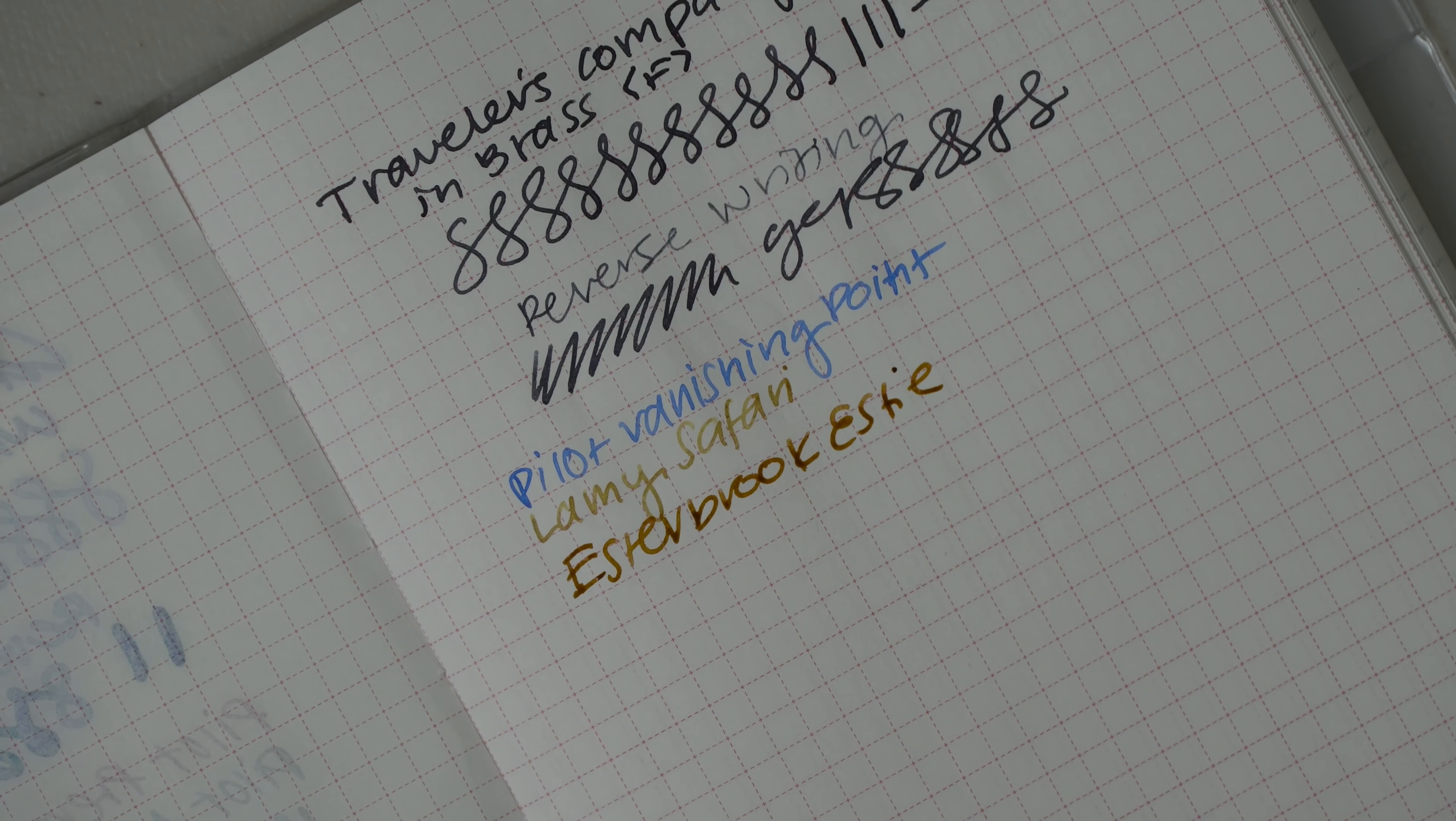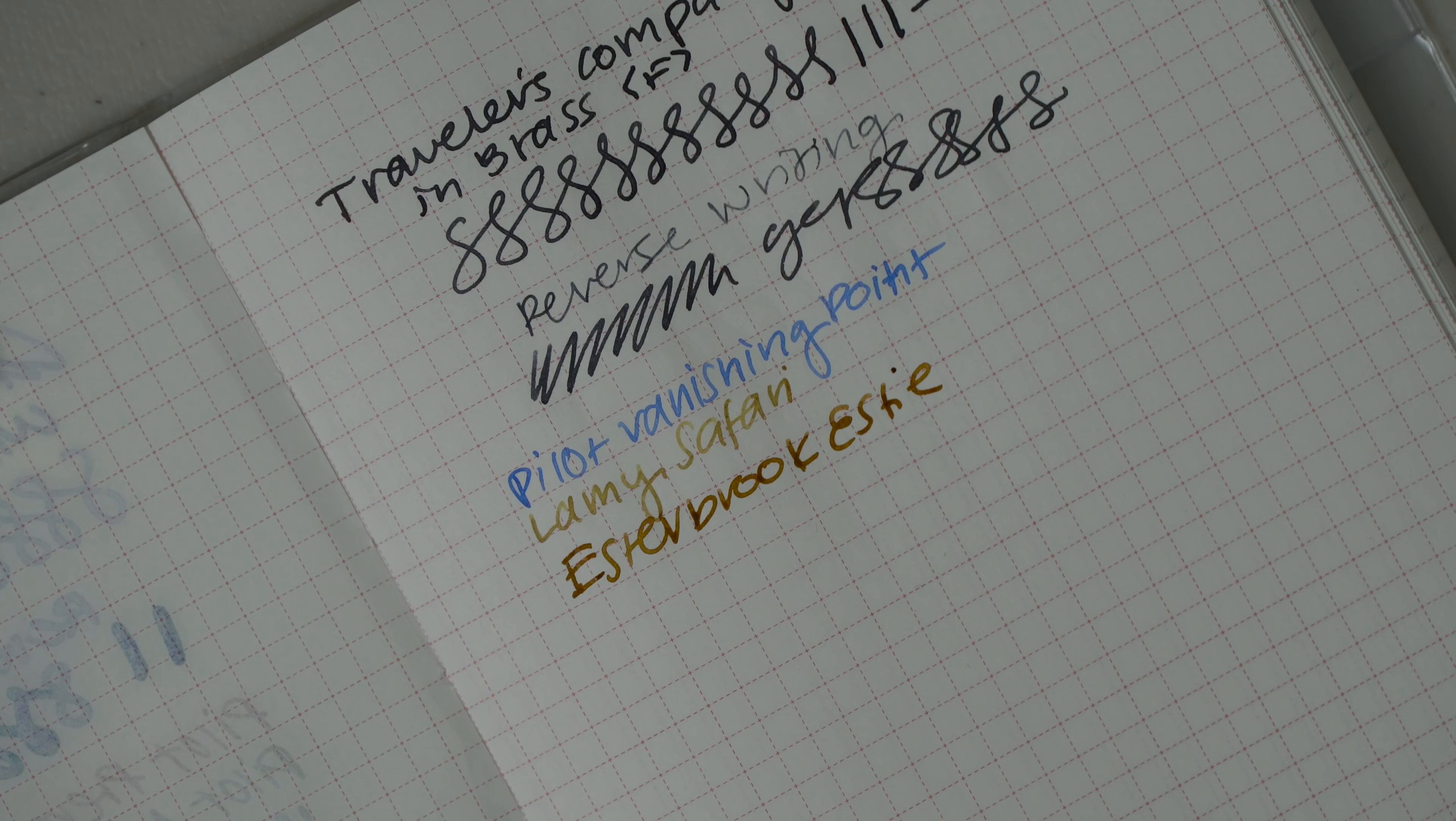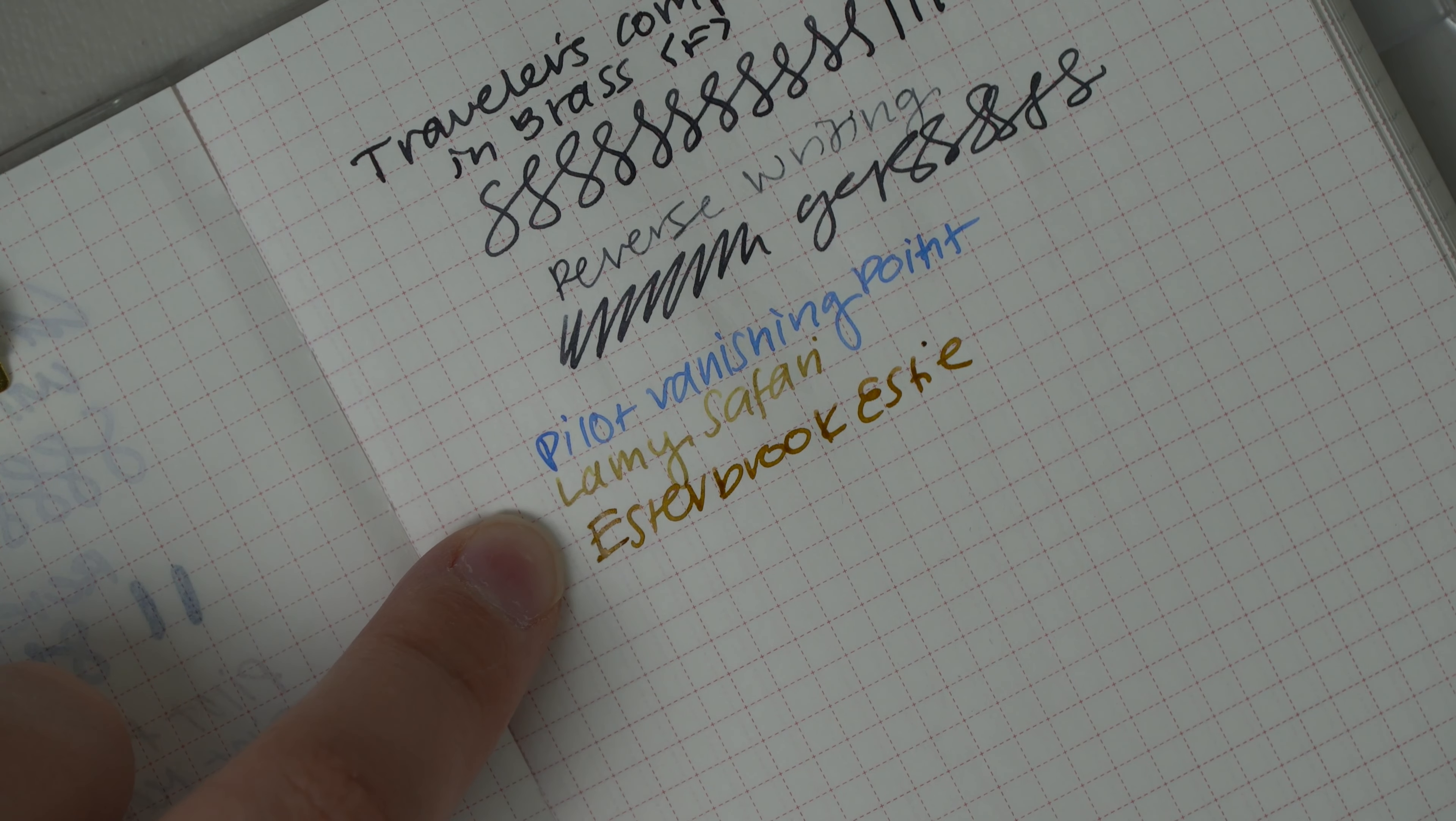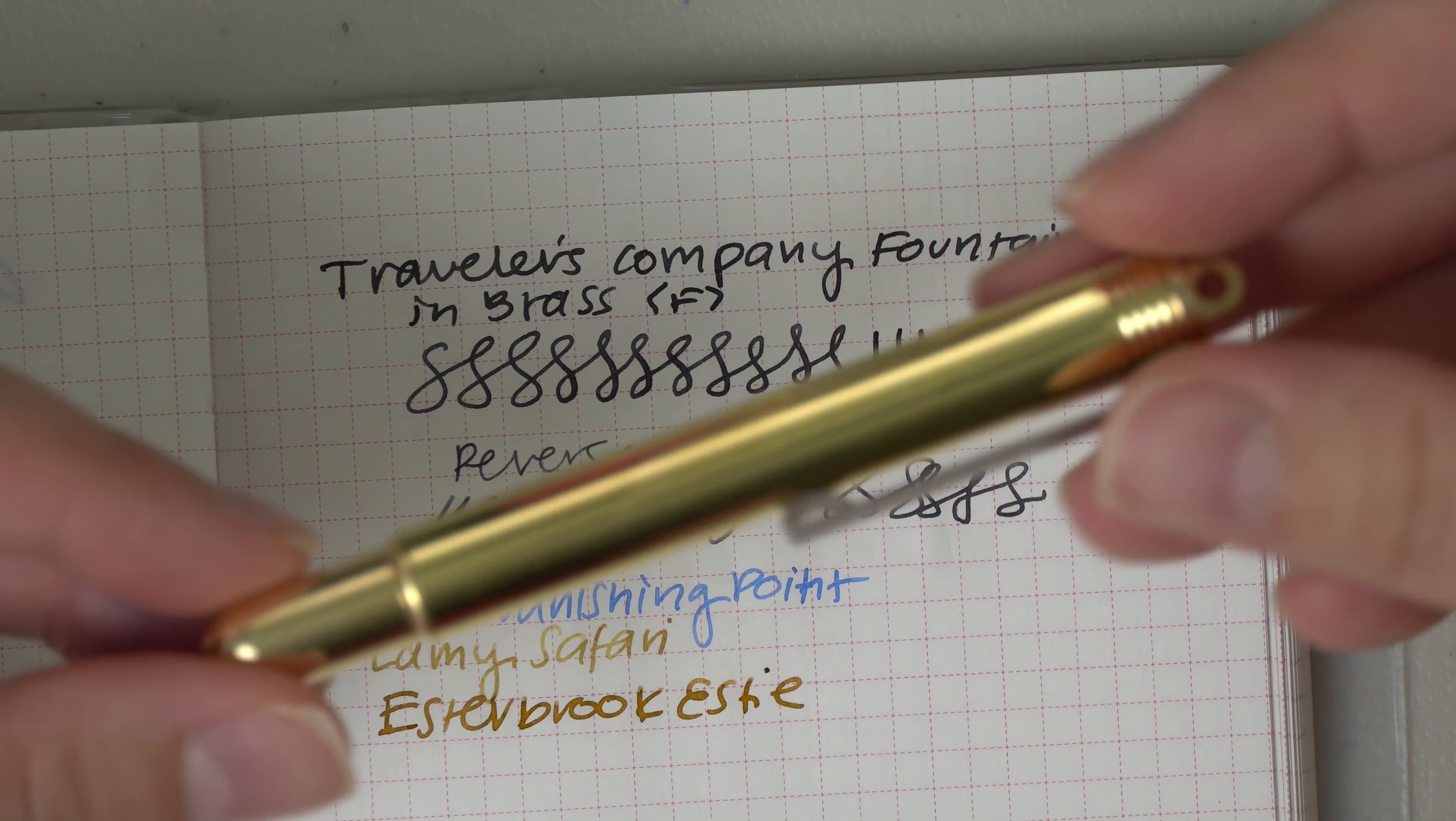And then I'll go ahead and compare it to my Esterbrook Estie, which is also in a fine nib. I'd say it's definitely more of a Japanese fine. It's pretty close to the Pilot Vanishing Point. As you can see, the Esterbrook and the Lamy are a little bit bolder, I feel like. But overall, a really nice writer and a happy new addition to my little fountain pen family.